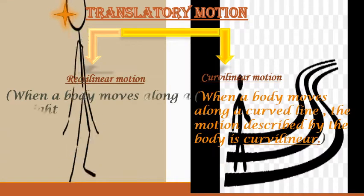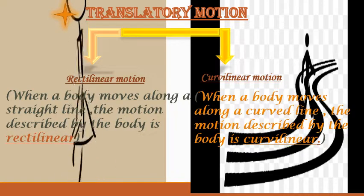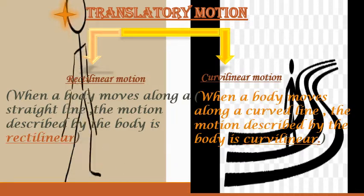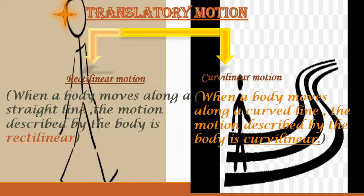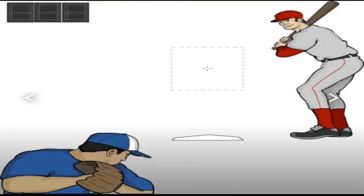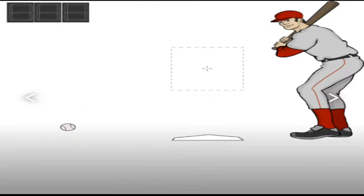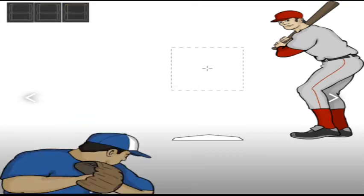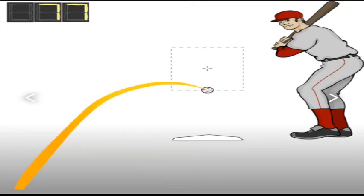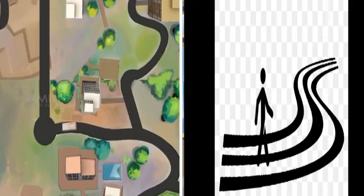Next is curvilinear motion. Curvilinear means along a curve. When a body moves along a curved line, then the motion described by the body is called curvilinear motion. Some examples of this motion are a ball thrown upwards at some angle, and a car or train moving along a curved road or track.